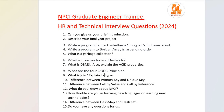The next question is the difference between Primary Key and Unique Key. First explain what each is, then differentiate them. A primary key uniquely identifies each record in a table but cannot store null values. A unique key prevents duplicate values in a column but can store null values. You can add more points to strengthen your answer.